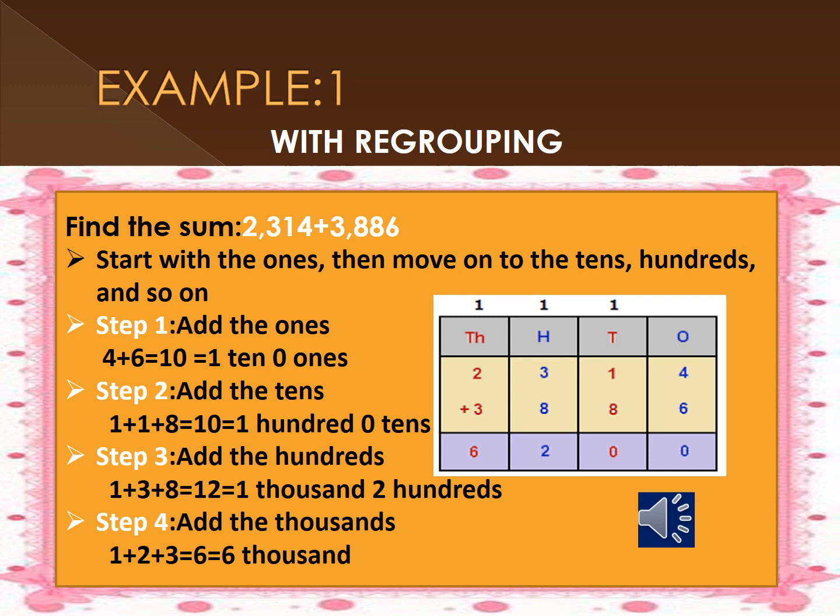Start with the ones, then move on to the tens, hundreds, and so on. Step 1 — add the ones: 4 plus 6 gives you 10. 0 will be in the ones place and 1 will be carried to the tens place. Step 2 — add the tens: 1 plus 1 plus 8 gives you 10. 0 will be in the tens place and 1 will be carried to the hundreds place.